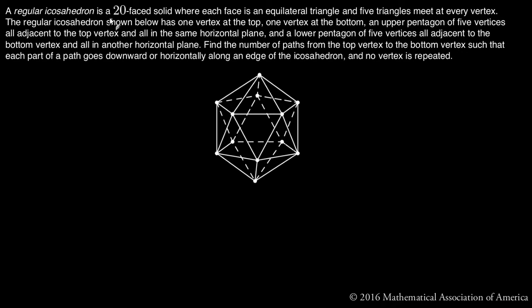A regular icosahedron is a 20-faced solid where each face is an equilateral triangle and five triangles meet at every vertex. The regular icosahedron shown below has one vertex at the top, one vertex at the bottom, an upper pentagon of five vertices all adjacent to the top vertex and all in the same horizontal plane, and a lower pentagon of five vertices all adjacent to the bottom vertex and all in another horizontal plane.